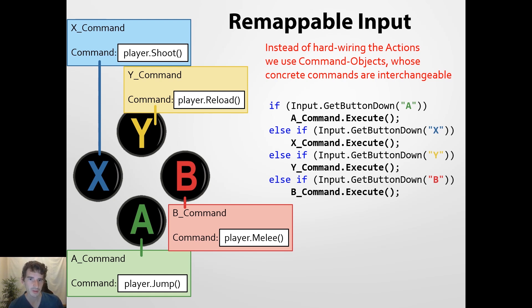And the concrete commands like A command, X command, Y command and B command can then be easily reassigned. And if you look at this code, you can see that the X command and the A command variable is just assigned a new command. In this case, the jump command or the shoot command. And that's how you can easily change the commands at runtime. So it's very easy to change the input mapping.